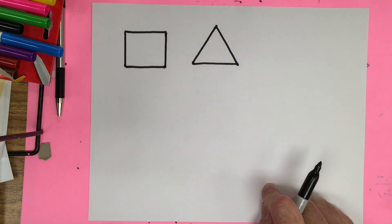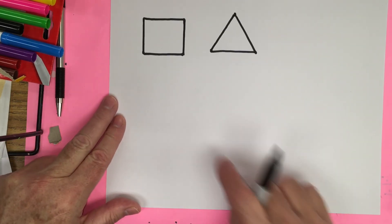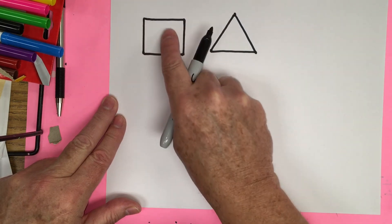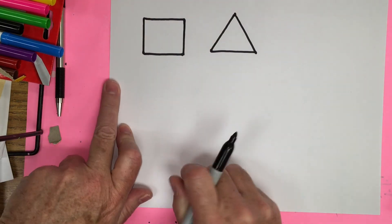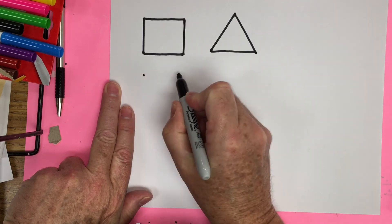The next shape we're going to make is a rectangle. And a rectangle is like a square but it's longer. So let's start off with a square or a square top.